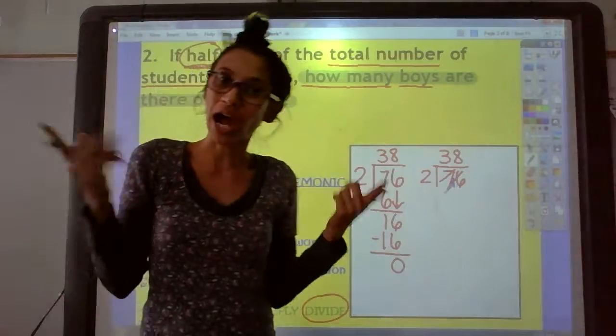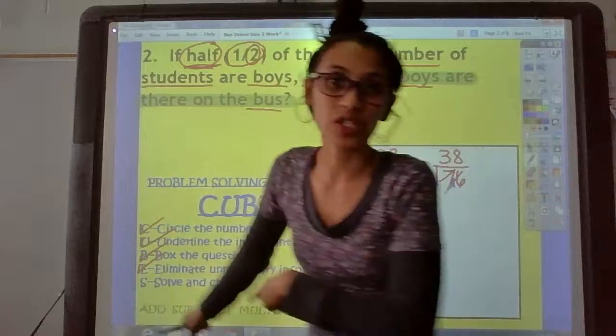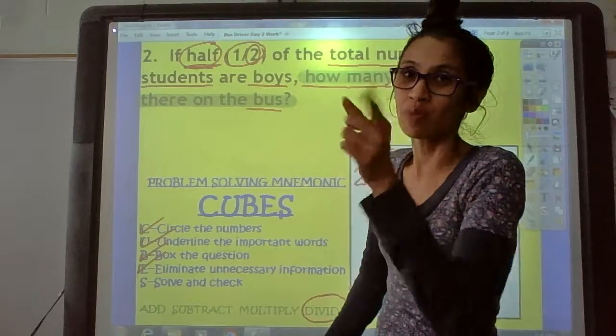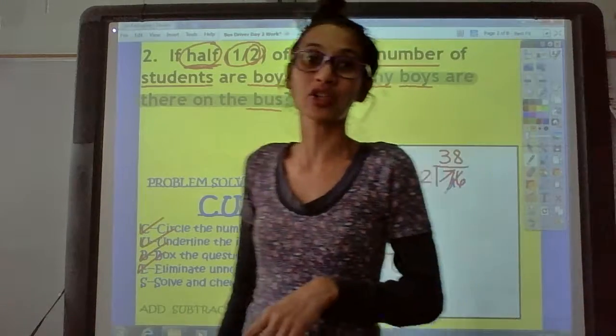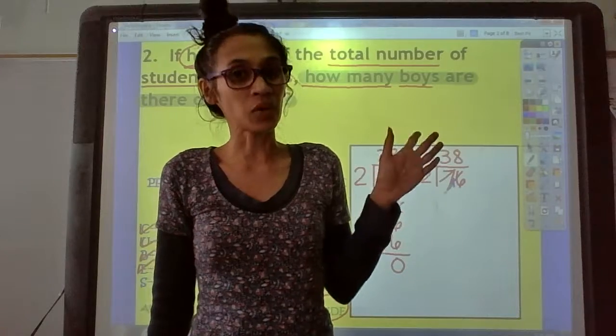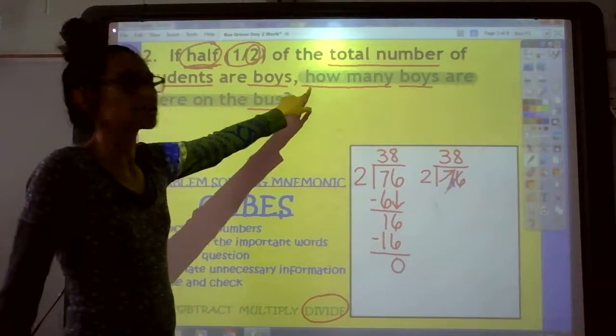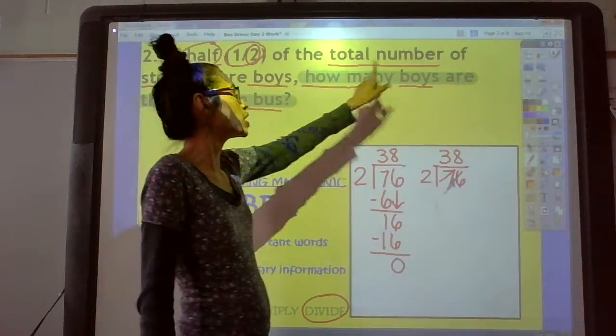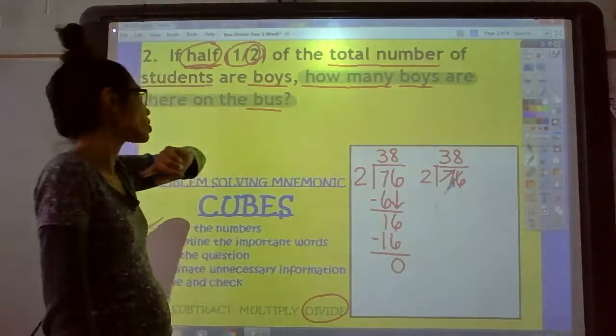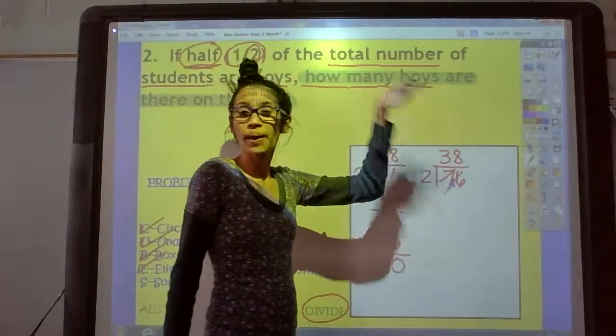We got the same answer. So, I know we did that right. So, I actually solved it and checked it. Remember, you can use a calculator to check your work. Okay? We're forgetting one thing. What are we forgetting? The unit. 38 what? It says right there in the question. How many boys are there on the bus? 38 boys.